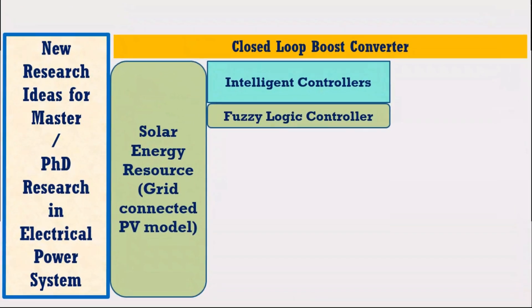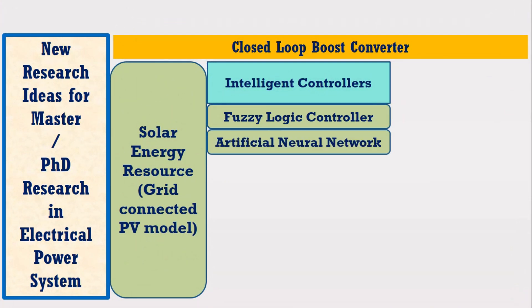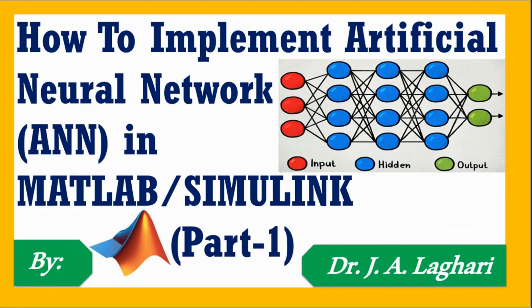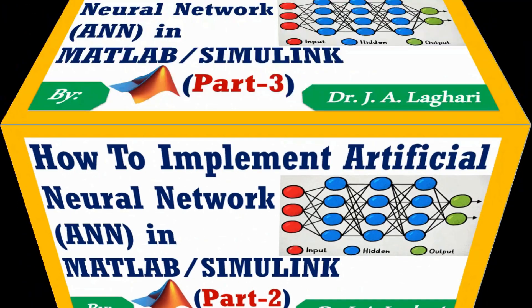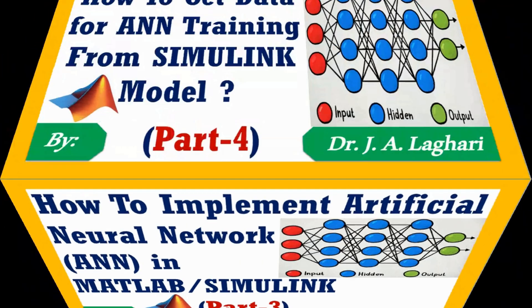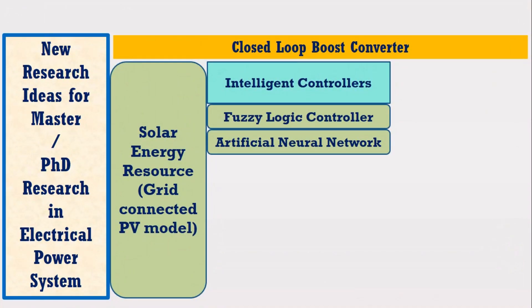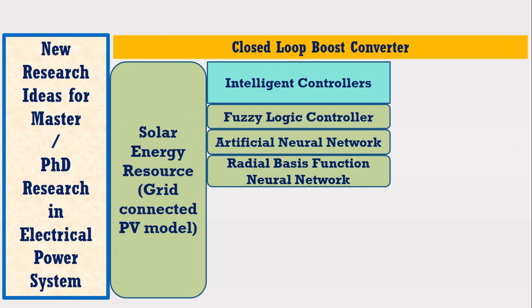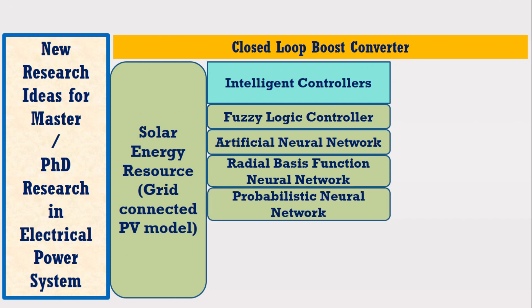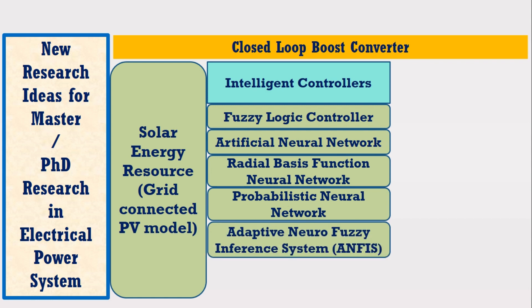Furthermore, you can also use fuzzy logic controller as well as artificial neural network as an intelligent controller. I have already made videos on the artificial neural network series with the title 'How to implement artificial neural network in MATLAB Simulink.' This ANN series consists of four parts. Artificial neural network also has many types such as radial basis function neural network or probabilistic neural network. You may also use the combination of artificial neural network and fuzzy logic controller, namely Adaptive Neuro-Fuzzy Inference System.